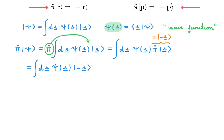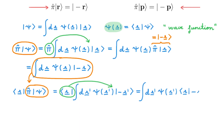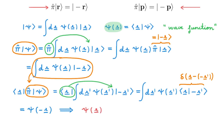It is now convenient to see what the new state pi psi looks like in the position representation. Inserting the expression we just obtained and moving the bra, and using the orthonormality of the position basis, we get psi of minus r. So what does this mean? If we start with the wave function psi of r and apply the parity operator, we end up with the wave function psi of minus r. This means that the parity operator reflects the wave function about the origin.